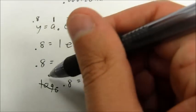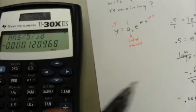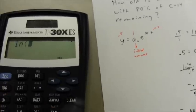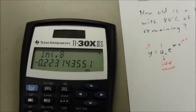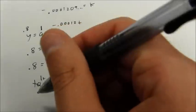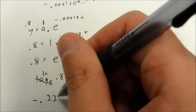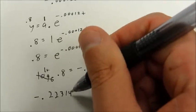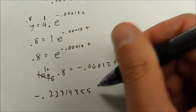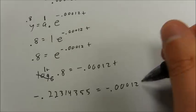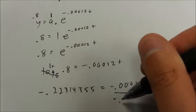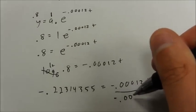And in log form, this is going to be the log base e of my result equals my exponent. And so, of course, that log base e is really the natural log. The natural log of 0.8 is going to be about negative 0.223. So, negative 0.22314355 is equal to negative 0.0012t.